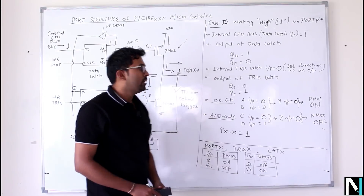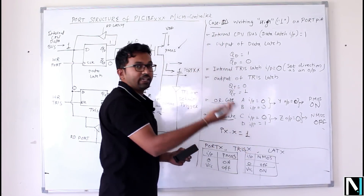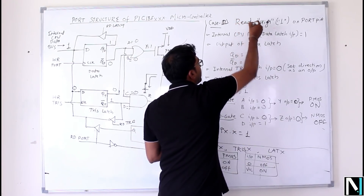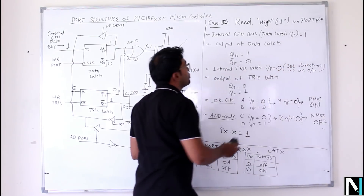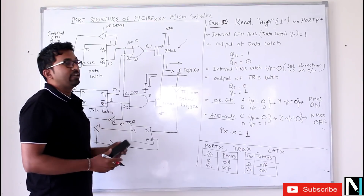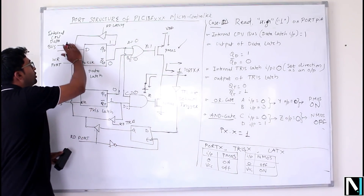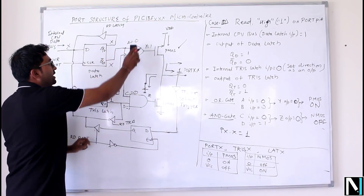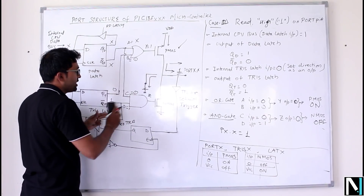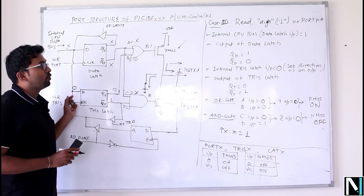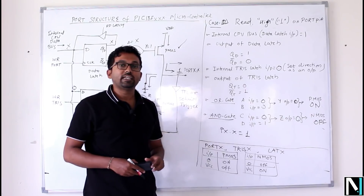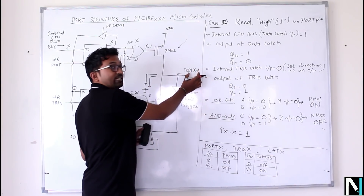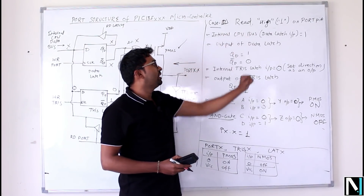With PMOS ON and NMOS OFF, VDD drives voltage through to the pin, which is held HIGH. The output pin returns HIGH — that's Case 2 complete. Now Case 3: reading HIGH data into the microcontroller. While reading, the internal CPU data bus values are don't-care because we are not providing data from the CPU side. The data is arriving at the external pin and we need to read it.